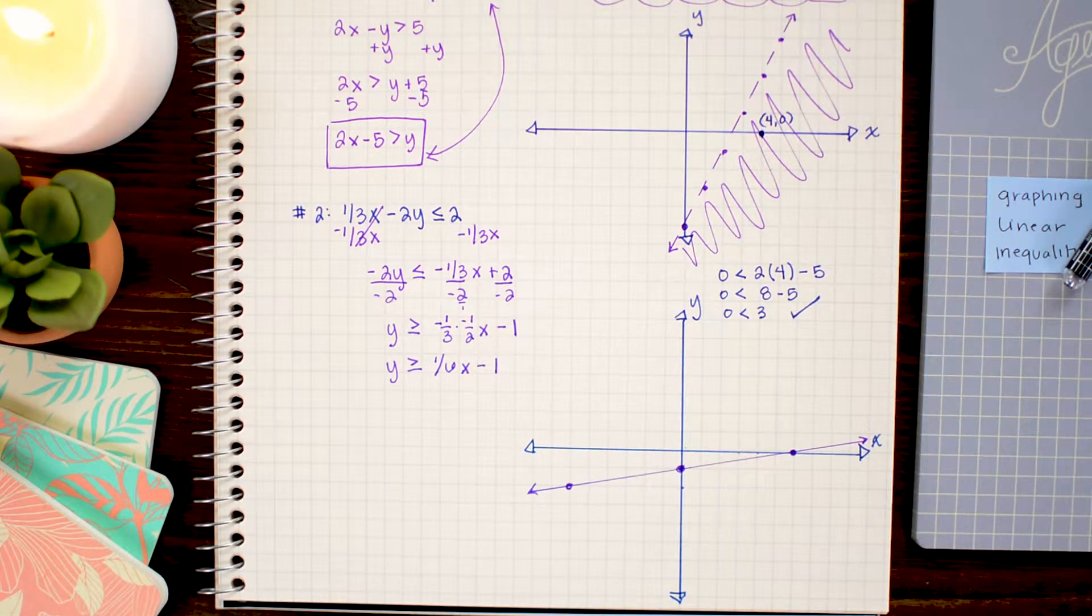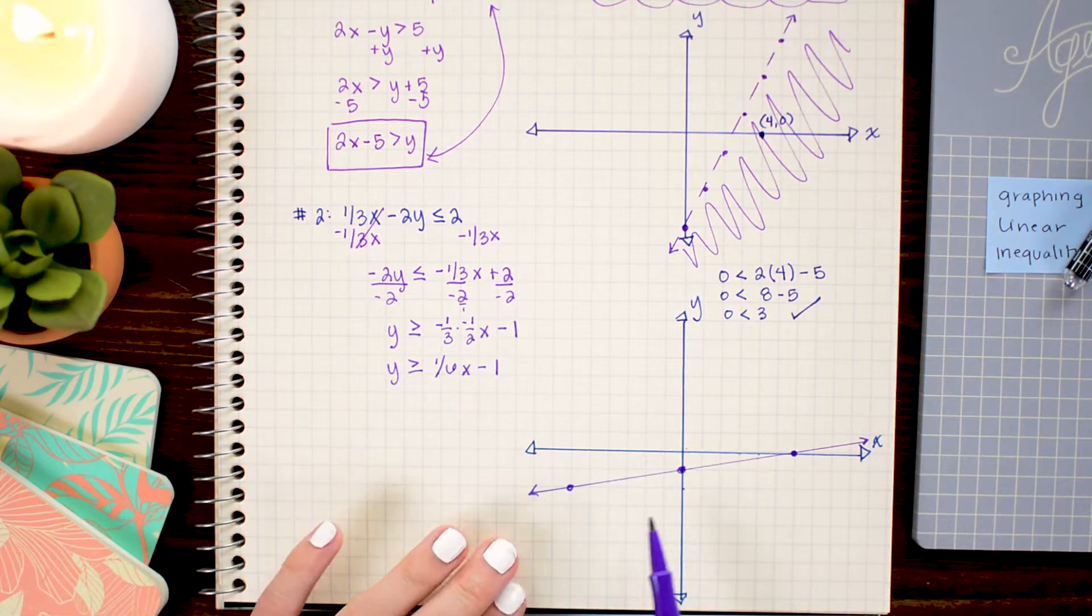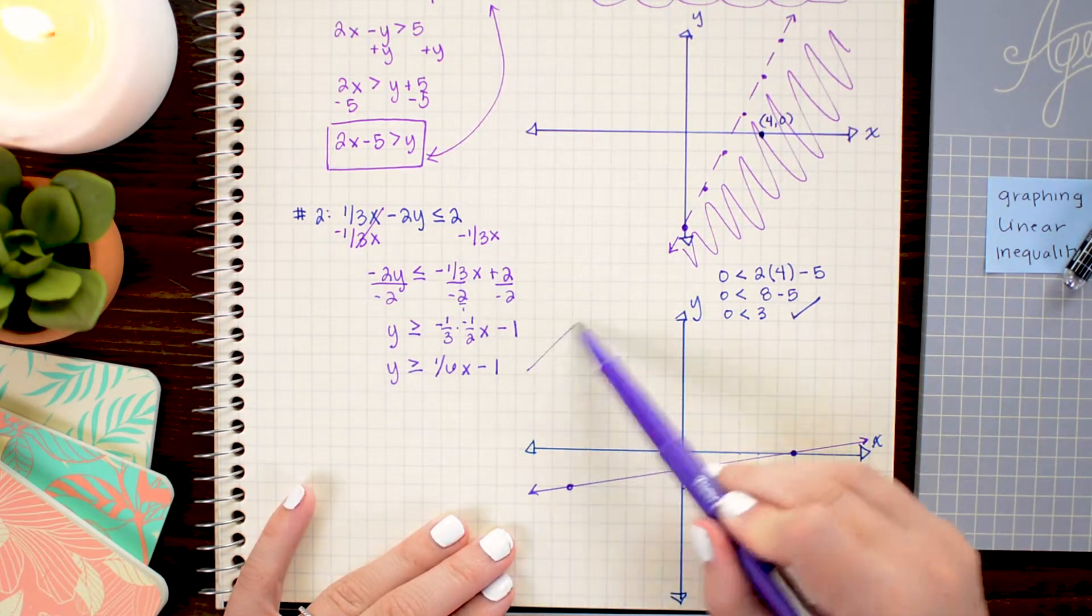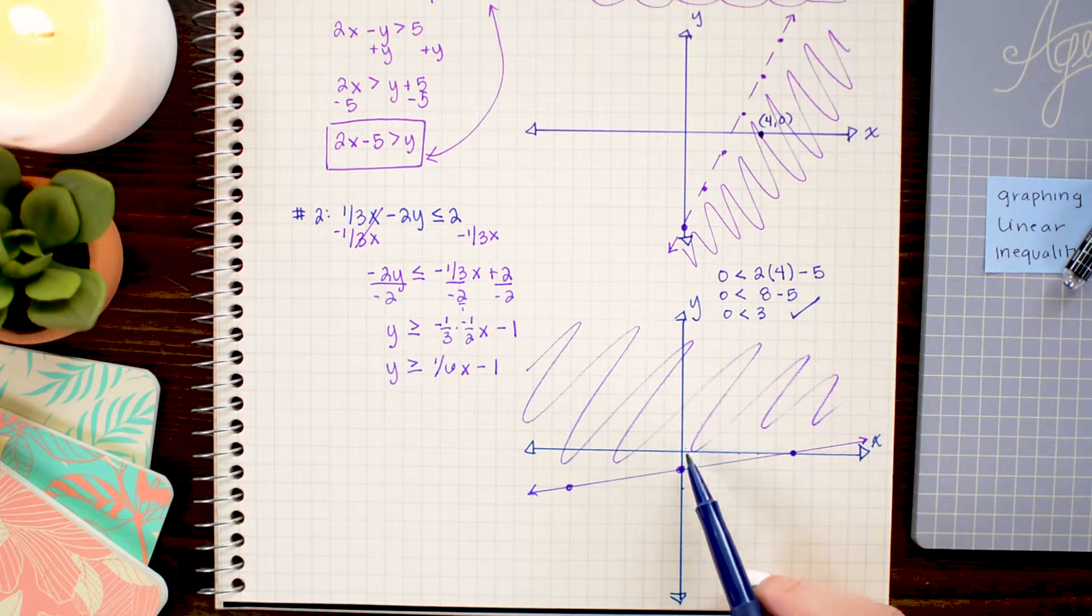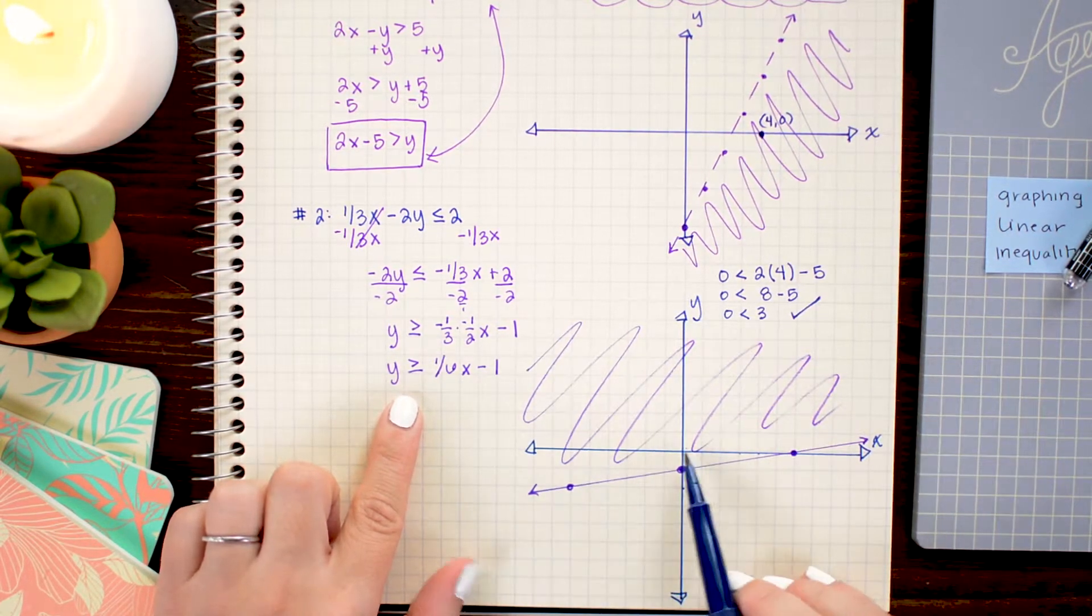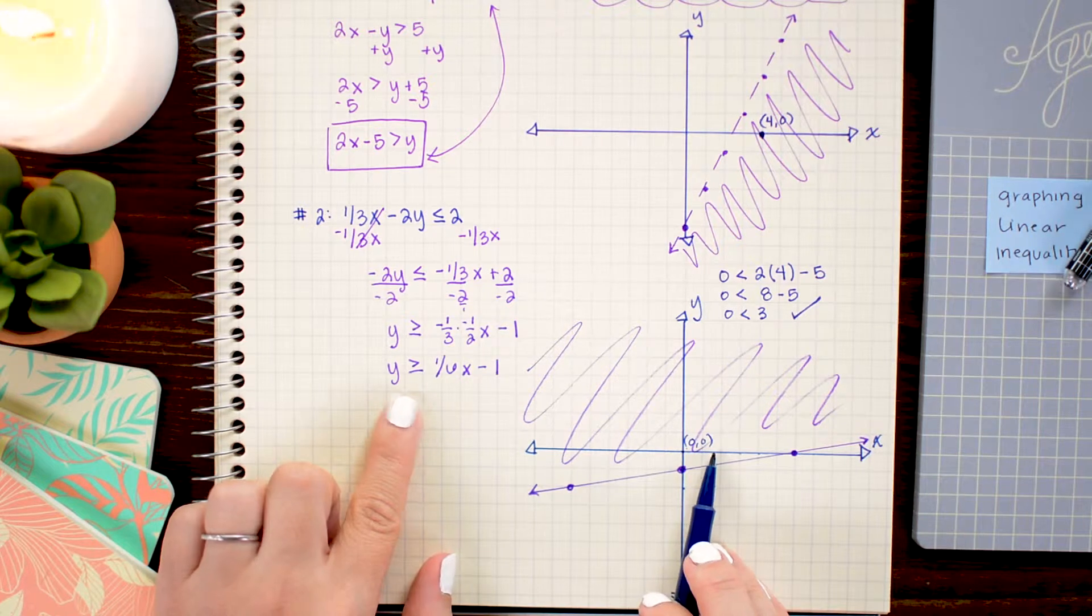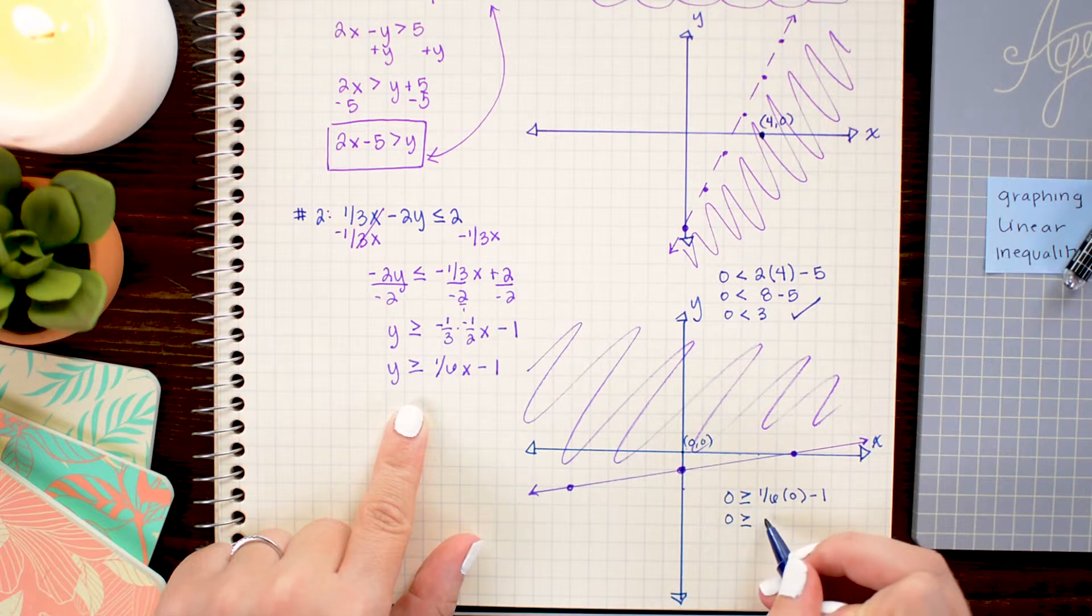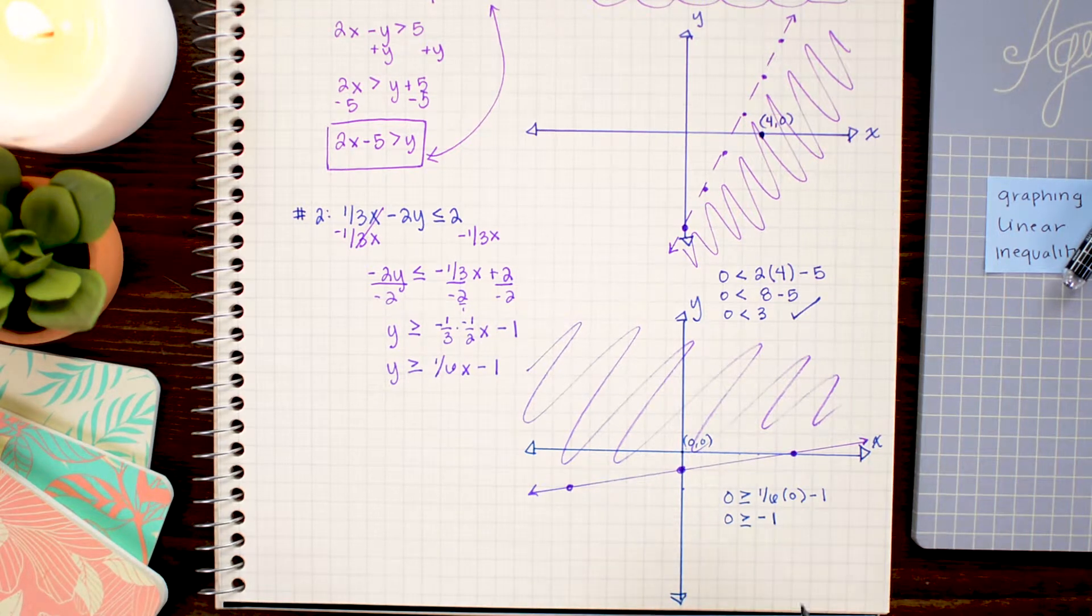The last step is to shade the correct region. Here I want y values that are greater than our line. So the y value gets larger as I go up. So I'm going to shade above this. If you're unsure if you shaded the right region, once again, we can pick a point and plug it into the equation. The easiest point in this shaded region to check is the origin 0, 0 here. So I'm just going to plug in 0 and 0 for x and y in this equation and see if it holds. When I do that, I get 0 is greater than or equal to negative 1. That is true. So I have shaded the correct region.